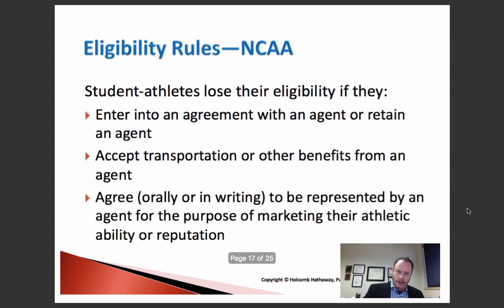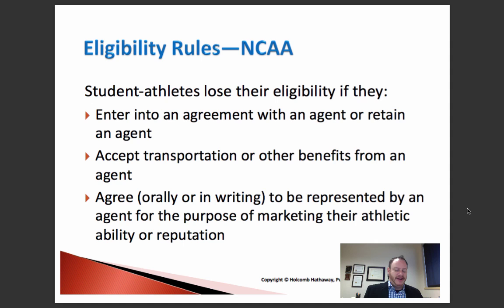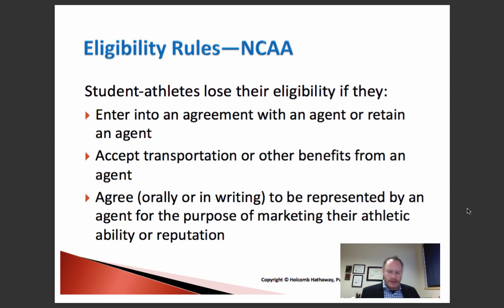Regarding eligibility rules: student athletes will lose their eligibility if they enter into an agency agreement, retain an agent, accept impermissible benefits such as transportation from the agent, or agree to be represented for purposes of marketing their athletic ability and reputation. For example, if a high school student who plays AAU basketball signs an agreement allowing a third party to do their marketing in the future once they graduate from college, that would be a potential violation of NCAA rules.